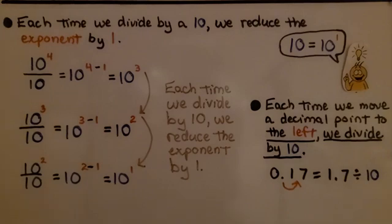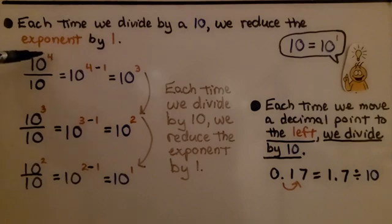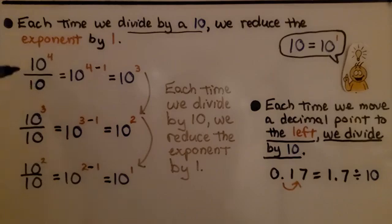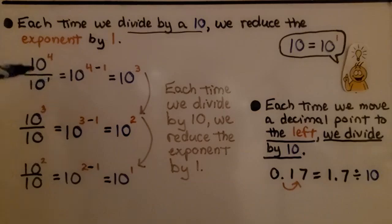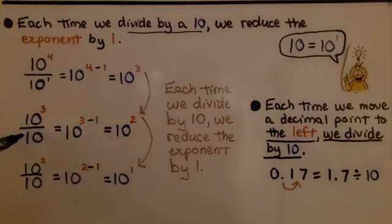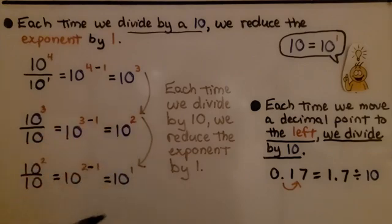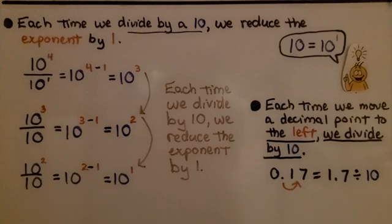Each time we divide by 10, we reduce the exponent by 1. Keep in mind that 10 is equal to 10 raised to the first power. If we have 10 raised to the fourth power and divide it by 10 — fractions are like little division problems — this equals 10 raised to the 4 minus 1, which is 10 to the third power. Dividing again gives 10 to the second power, and again gives 10 to the first power. Each time we move a decimal point to the left, we divide by 10.